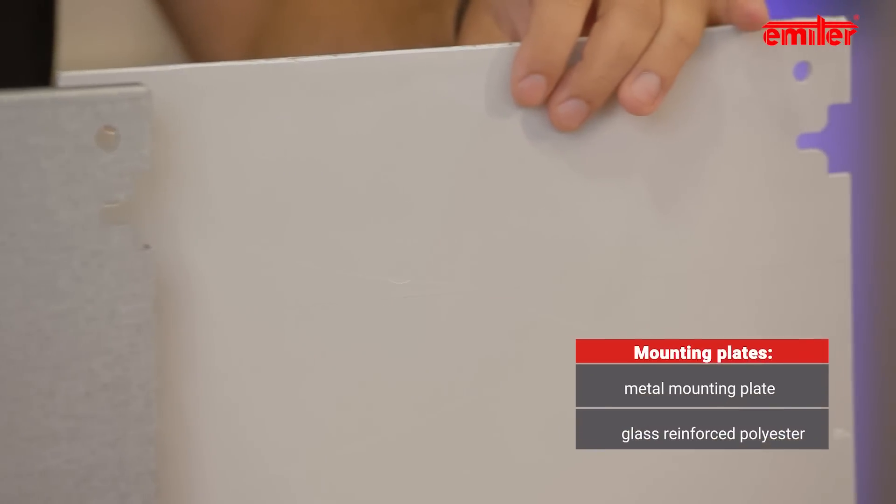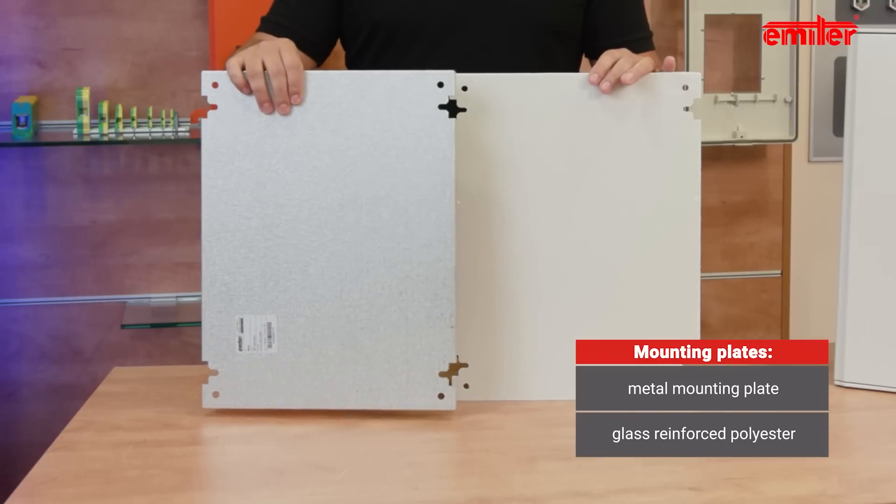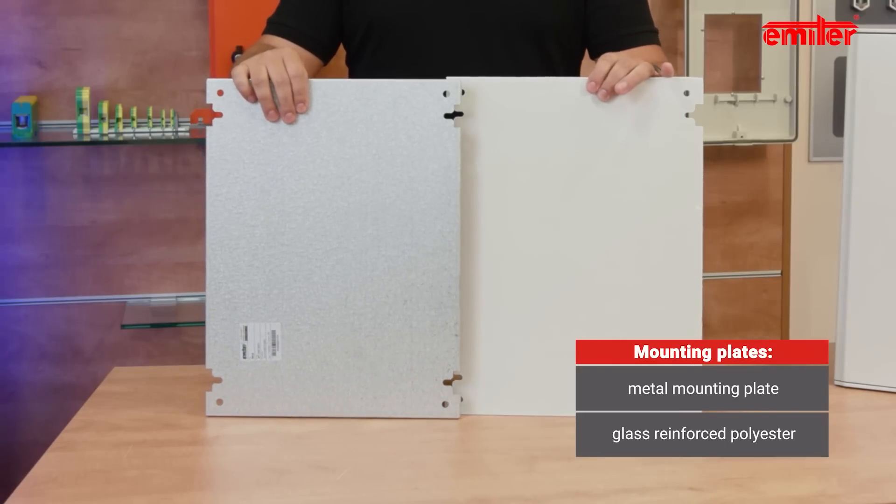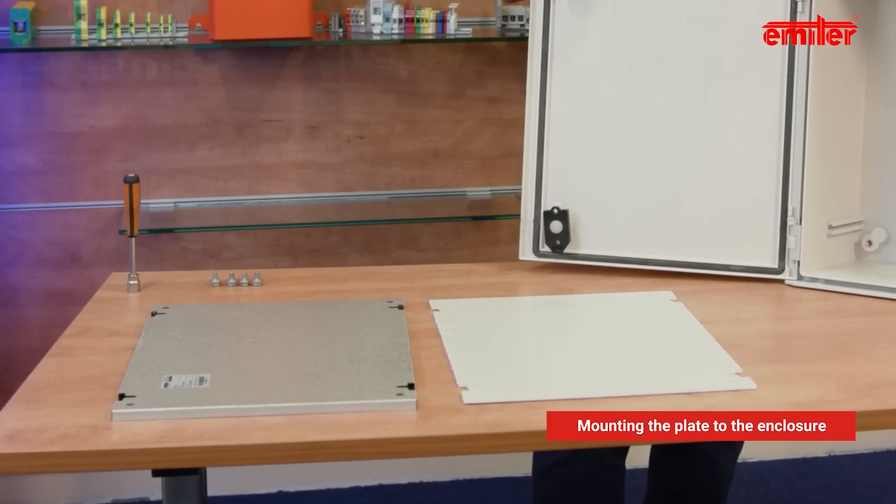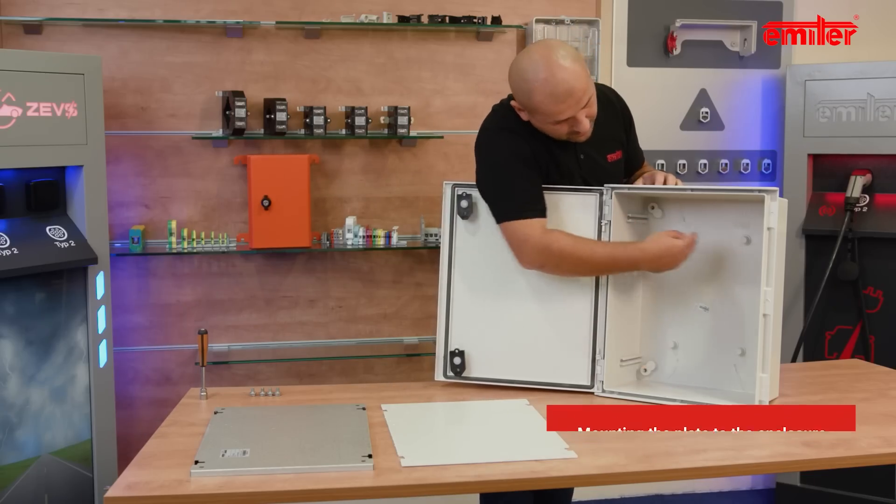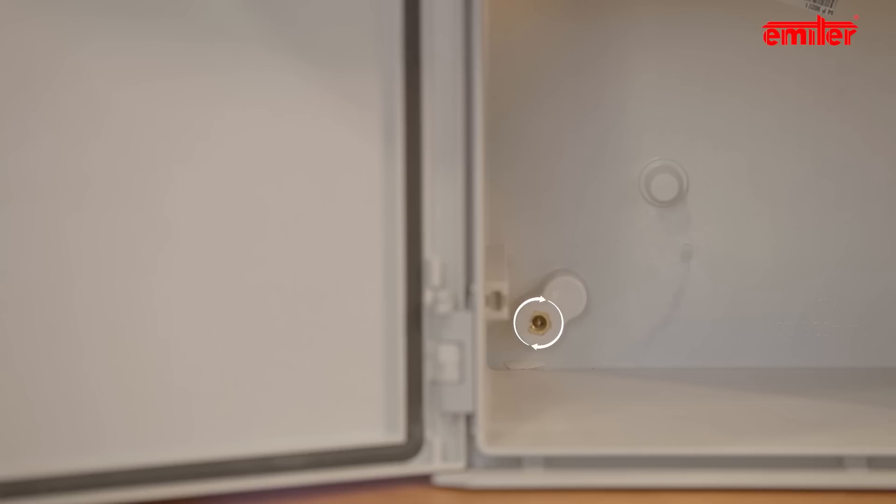Let's start with a very frequently used element, which is the mounting plate. There are two types of plates to choose from: metal mounting plate and glass reinforced polyester mounting plate. All of those plates can be installed in two ways. The easiest is to fasten to four insulators with brass inserts, which are placed in the corners.